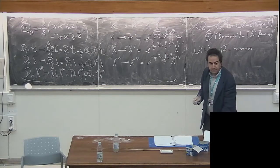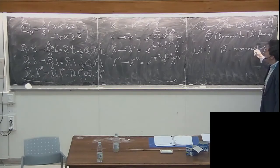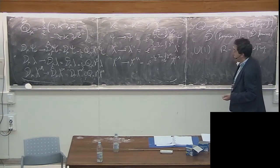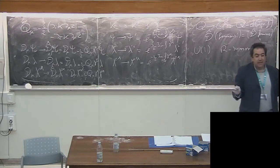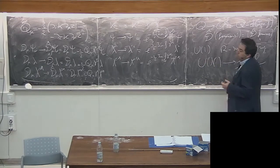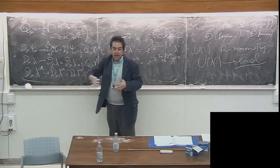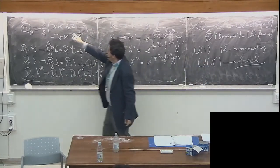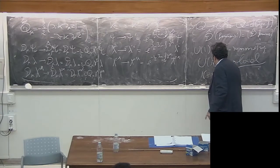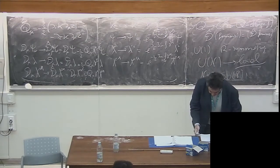This U(1) acting on the fermions is the R-symmetry of the supersymmetry algebra. It acts on psi_mu, which is dual to the supercharges, so it's a U(1) symmetry acting on the supercharges — an automorphism of the superalgebra. This is generic in any supergravity: the R-symmetry group U(n) becomes local, and is gauged not by vector fields but by a composite connection made of scalar fields.